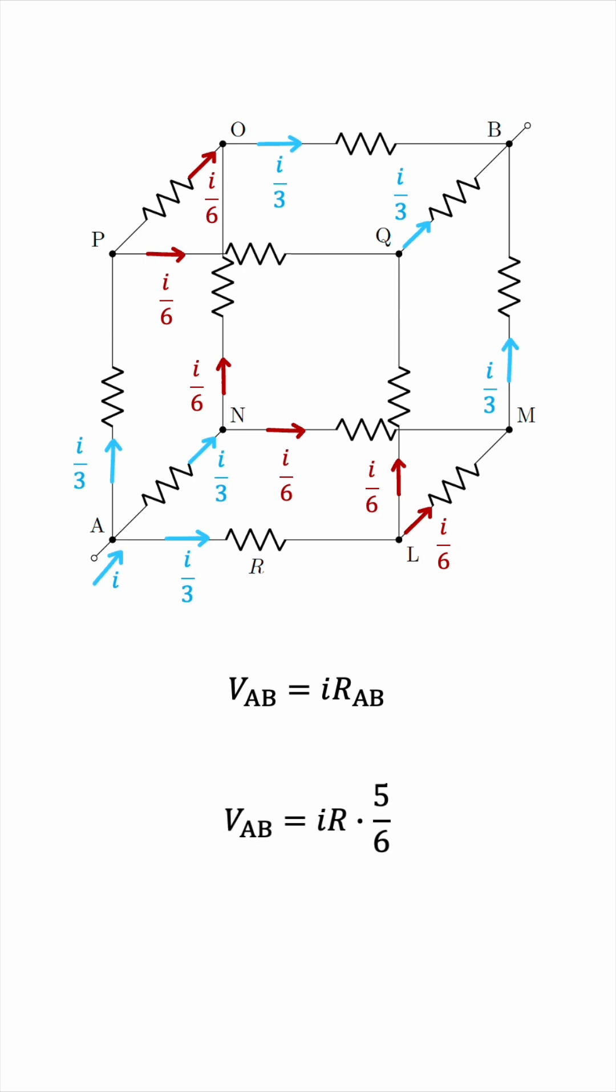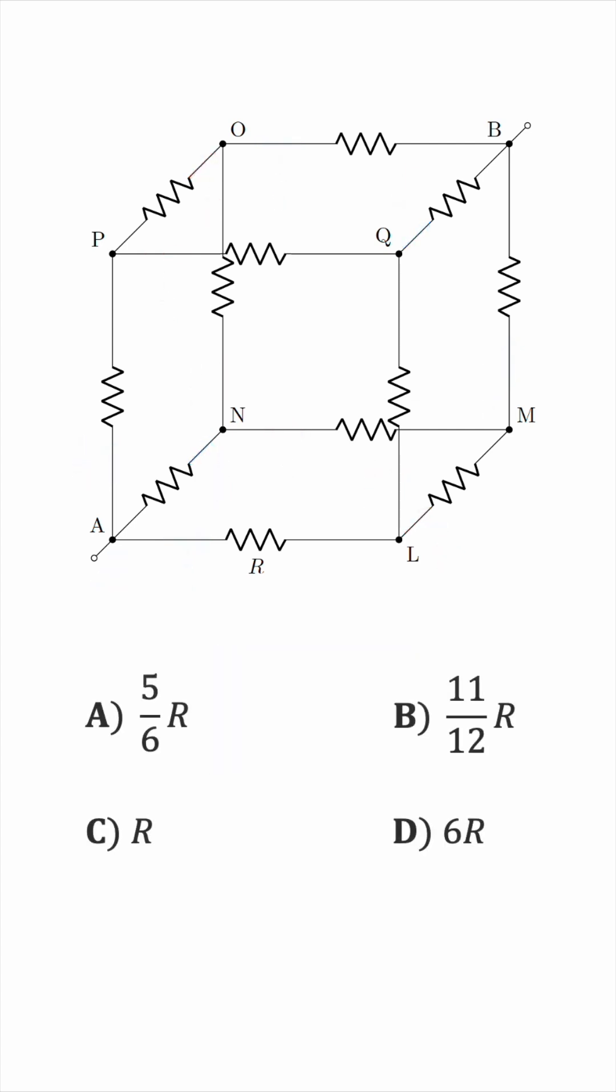This is VAB, so we can substitute it into the first equation. I cancels out, and we arrive at a form for RAB, which is exactly equivalent to what we obtained using the earlier method of tracking the potential instead of the current. RAB is 5 over 6R, which means that the correct answer is A. Could you figure it out?